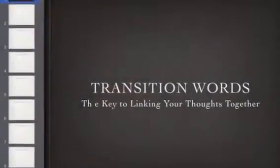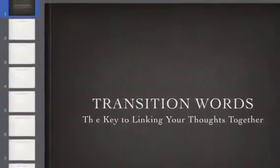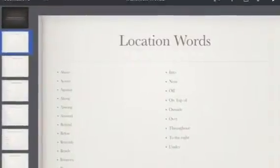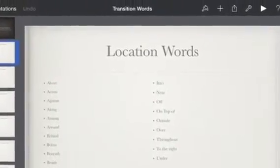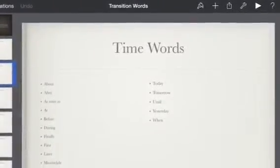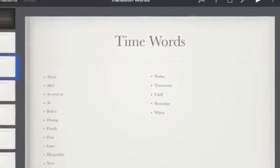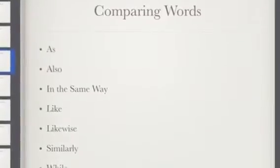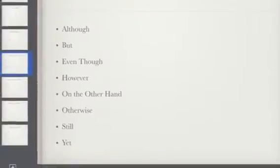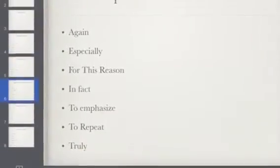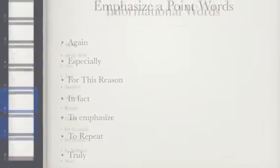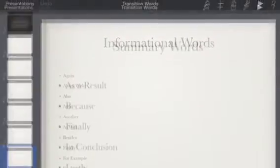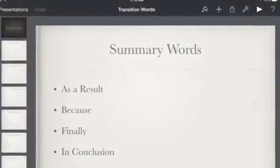This was a keynote about transition words. This slide was about location words, and this slide was about time words. This slide was about comparing words, and this slide was about contrasting words and information words. This slide was about summary words.